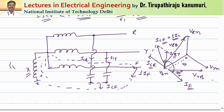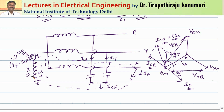Even when the fault current is passing, the current that passes equals IF minus ICF. This current squared multiplied by the resistance of the reactor — since the resistance is negligible — is approximately equal to zero. There is no power loss in the reactor.